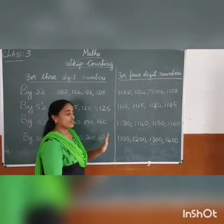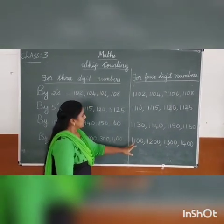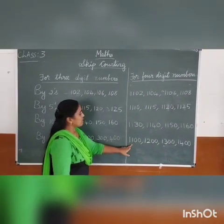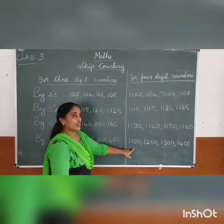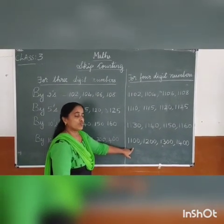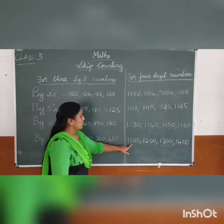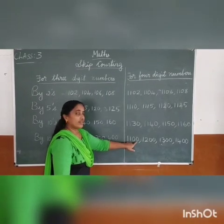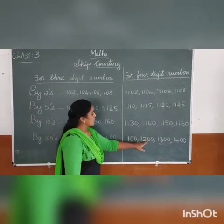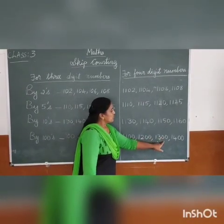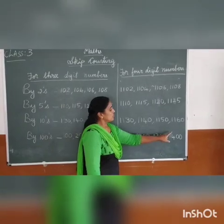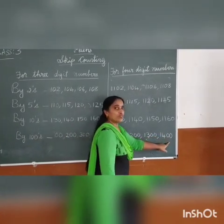Next one, by 100s, for 4-digit numbers. 1,100 — 1,200 — 1,300 — 1,400.